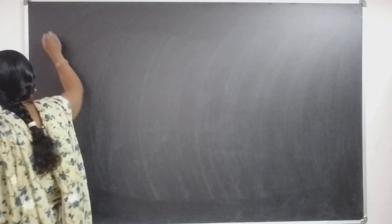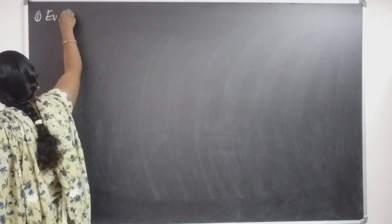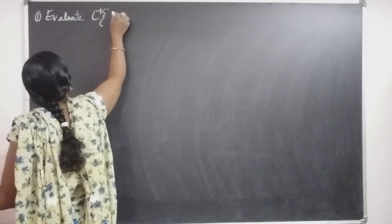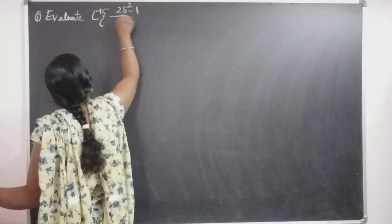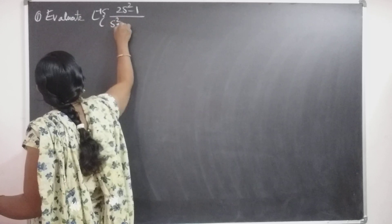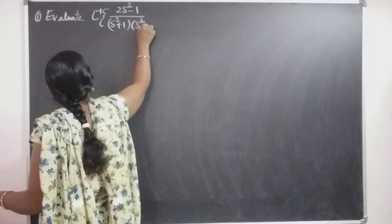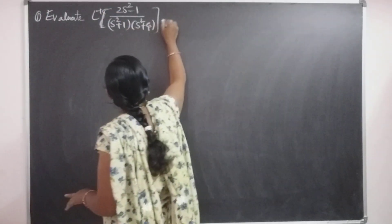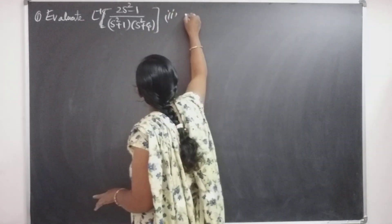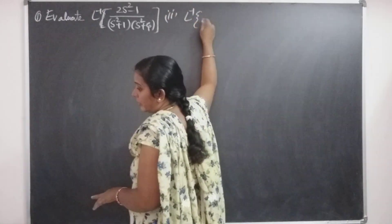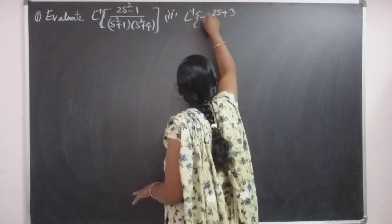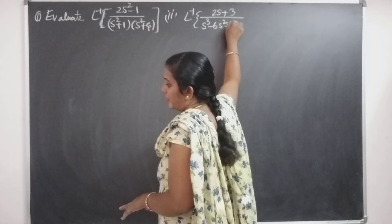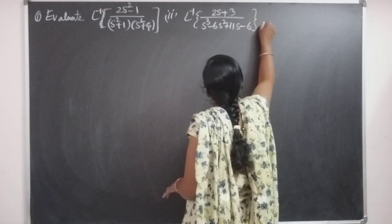The first problem: evaluate L inverse of (2s² − 1) / [(s² + 1)(s² + 4)]. The second problem: L inverse of (2s + 3) / (s³ − 6s² + 11s − 6).